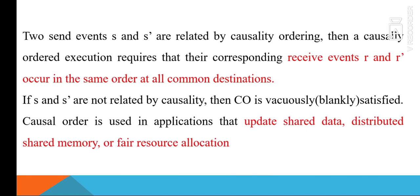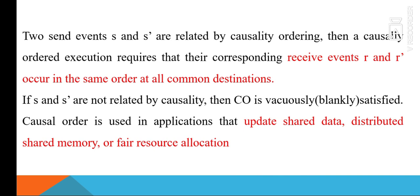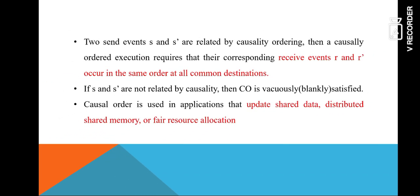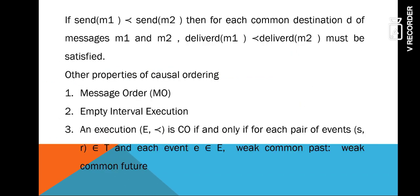If S and S' are not causally related, then causal ordering is trivially satisfied. This type of message ordering scheme is used in applications such as updating shared data, distributed shared memory, and fair allocation schemes. Other properties of causal ordering include message order, empty interval execution, weak common past, and weak common future.